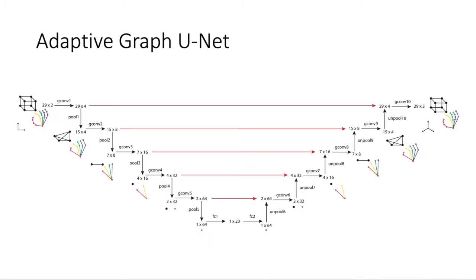Our adaptive graph unit is a graph convolutional neural network with a U-Net structure. To this end, we design three new operations: adaptive graph convolution and trainable pooling and unpooling layers.